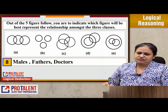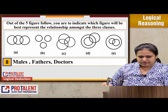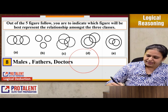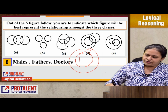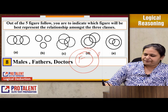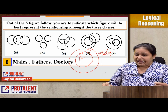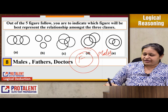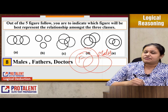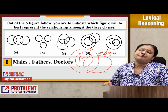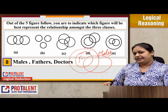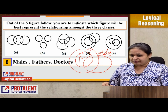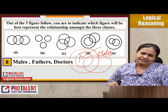Next question: males, fathers, and doctors. If we take males as the largest circle, fathers are going to be males. Doctors can be fathers, can be males, or can also be females. So accordingly, the best option I am getting is option D.